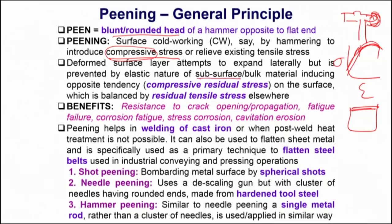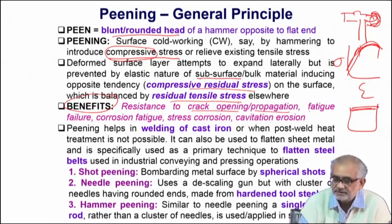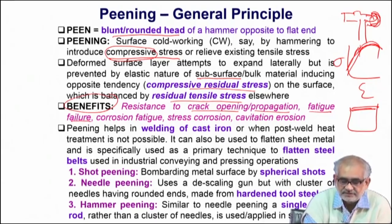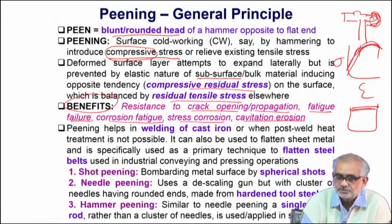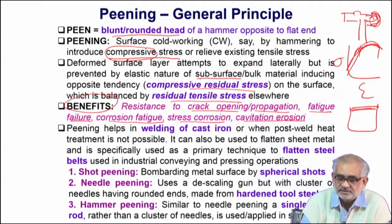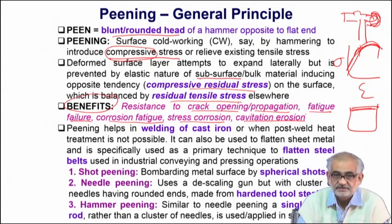This deformed layer is limited to what is known as the subsurface region. The bulk may develop residual tensile stress, but the surface develops residual compressive stress. This compressive state of stress provides resistance to crack opening or propagation, improves fatigue life, and creates resistance to corrosion fatigue, stress corrosion, or cavitation erosion. All these surface damages are reduced or prevented by creating such a compressive state of stress.